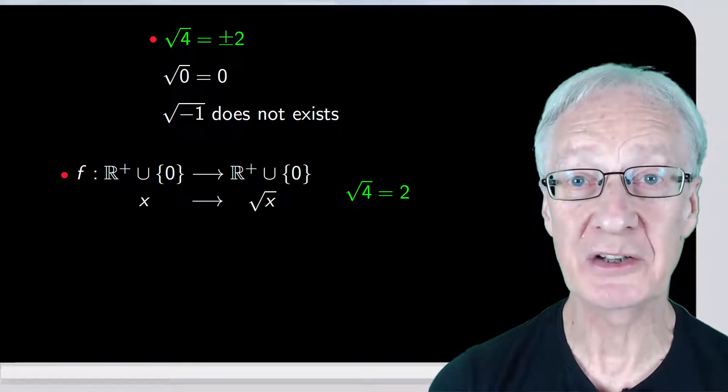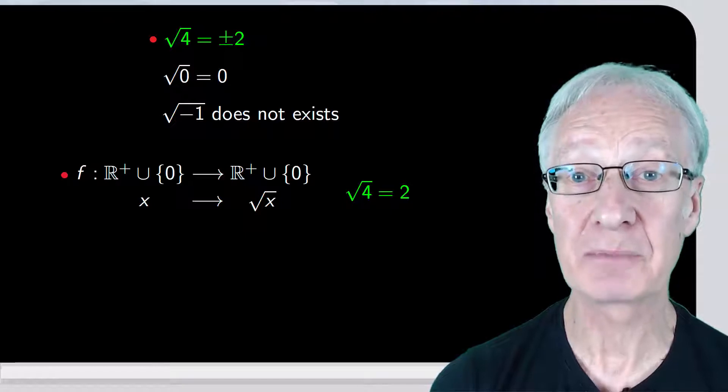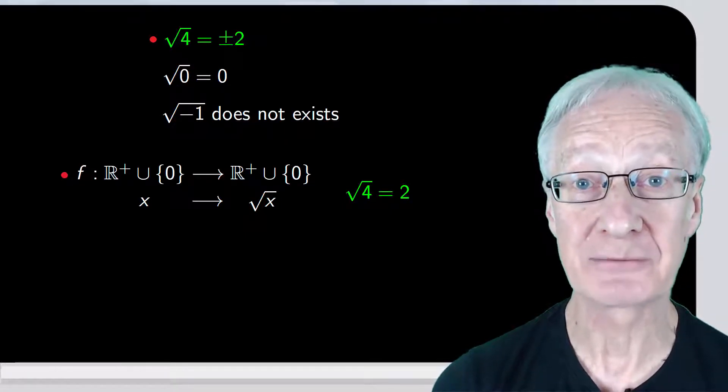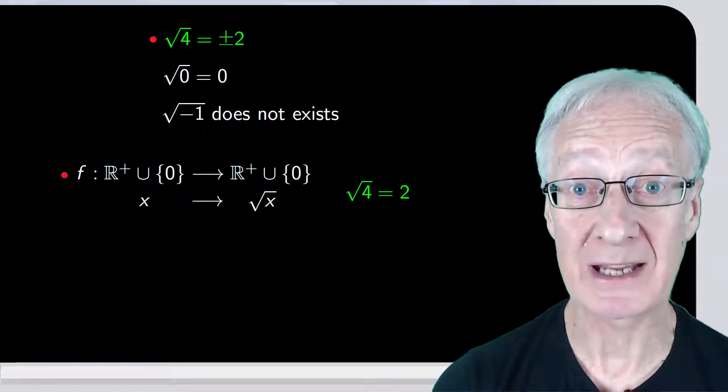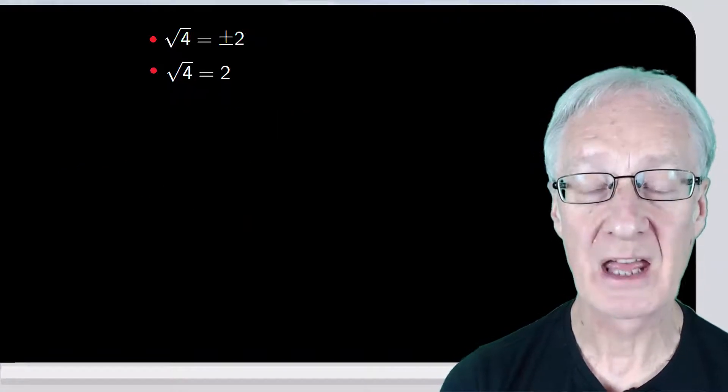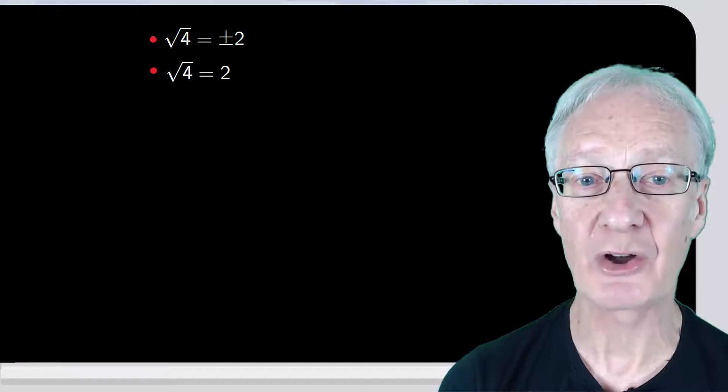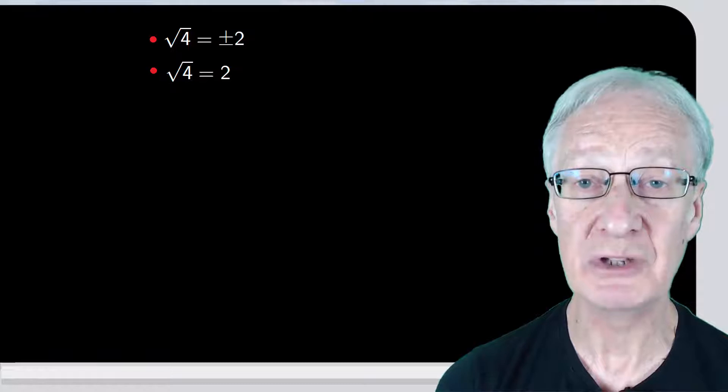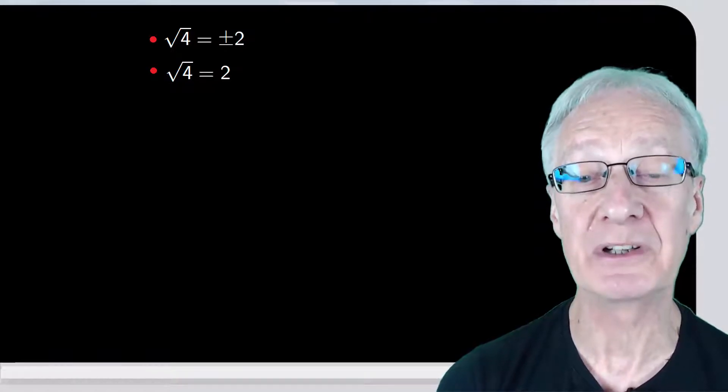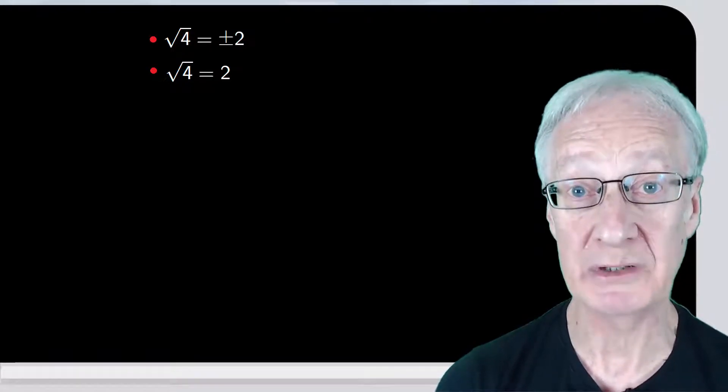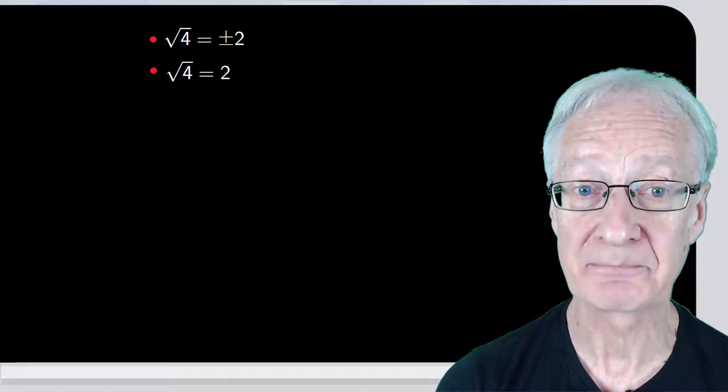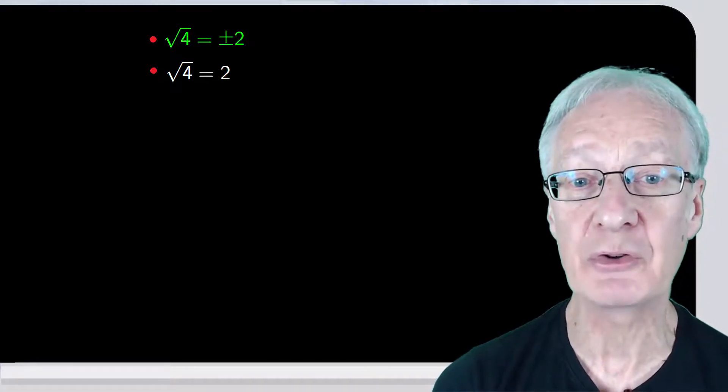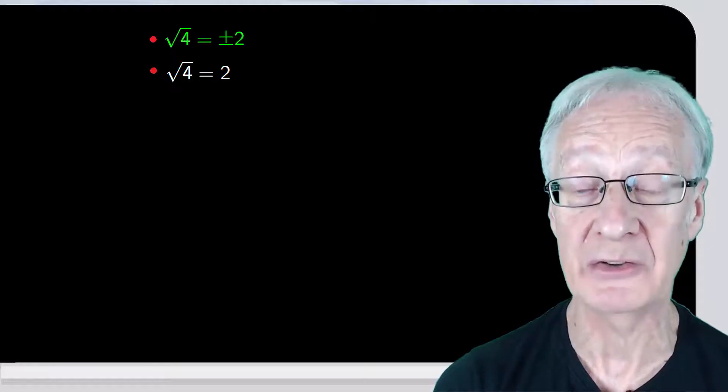But we said earlier that the square root of 4 is plus or minus 2. So, we have two options. Which one is correct? The answer is, it depends on the context. If we're working with sets, something that's not usual in r, but is possible, and in fact is done when we work in the field of complex numbers, the square root is a set, and the square root of 4 is plus or minus 2.